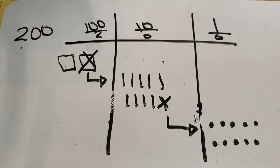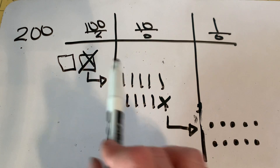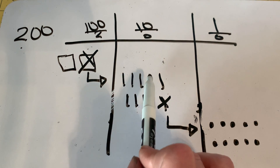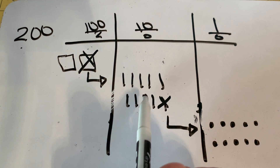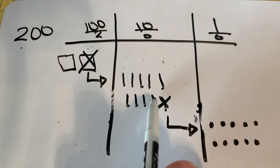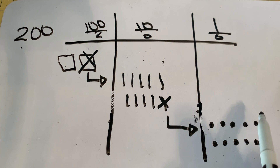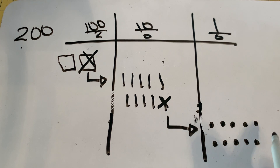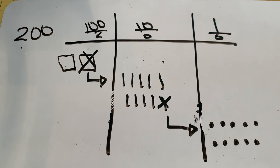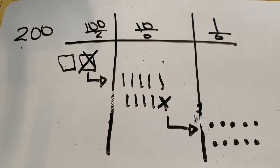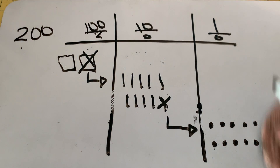Let's check to make sure we still have 200: 100, 110, 120, 130, 140, 150, 160, 170, 180, 190, 191, 192, 193, 194, 195, 196, 197, 198, 199, 200. We still have the same value of 200 — we're just showing it in hundreds, tens, and ones. Let's see how this will help us while we do our problems today.